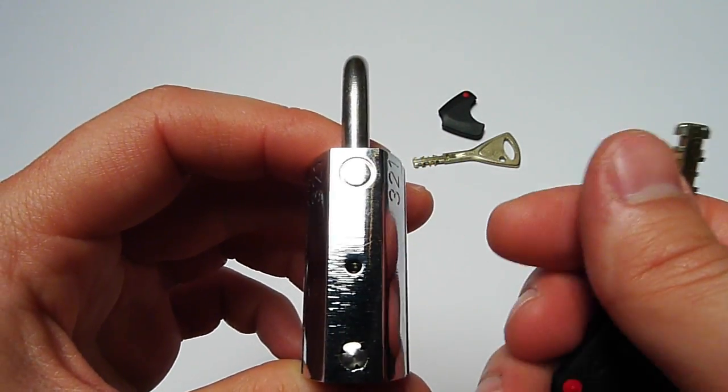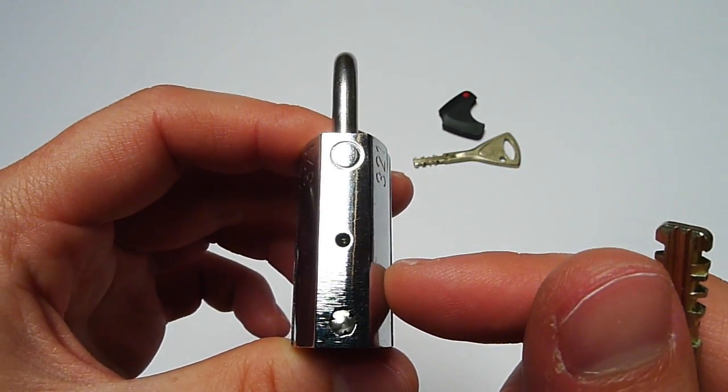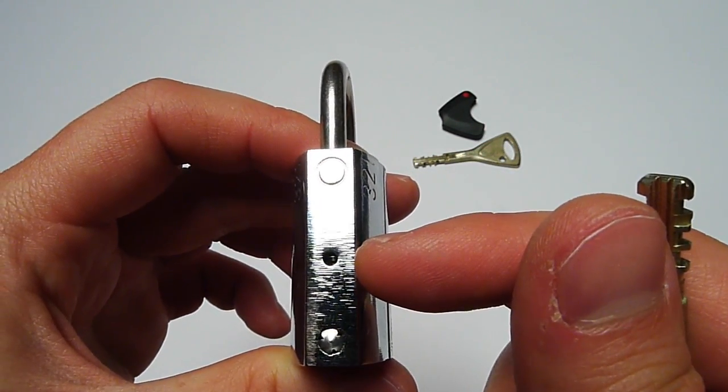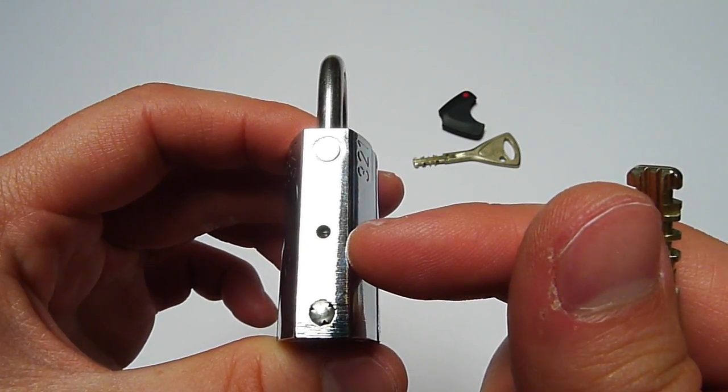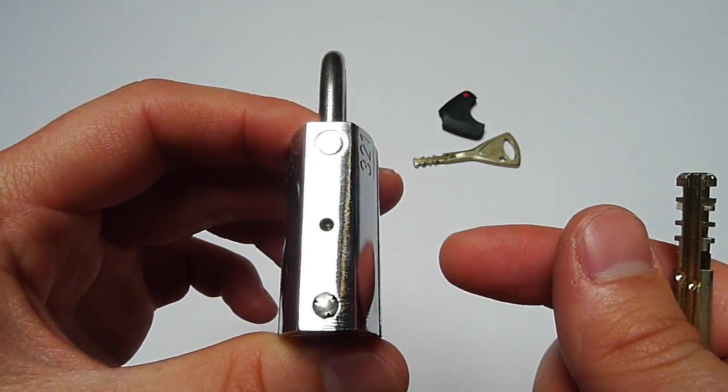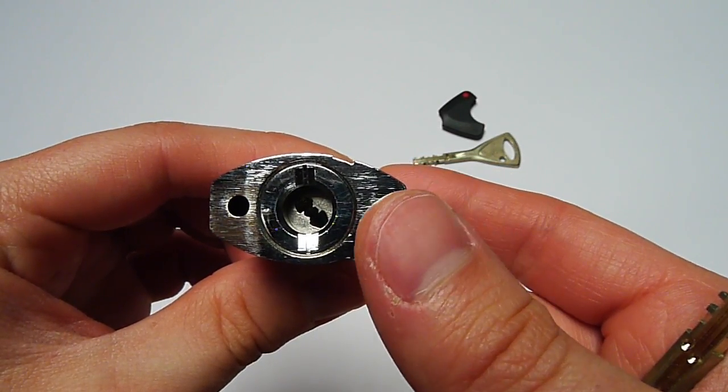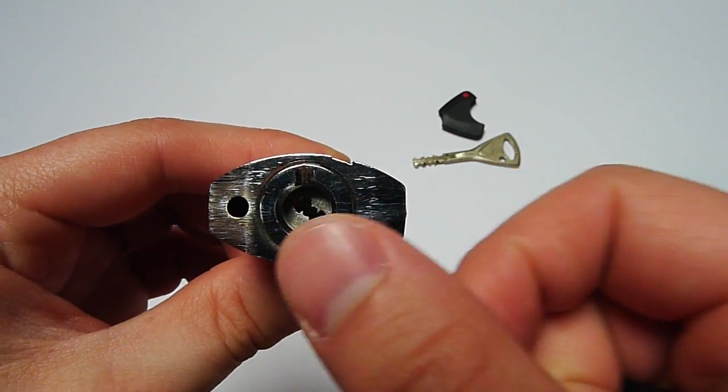So unlike the Ankylas padlock, the shackle will not go down all the way down here. The shackle will stop here and you will have the drainage hole on the side here. On the Ankylas padlock you have the second drainage hole down here like the one on the left.